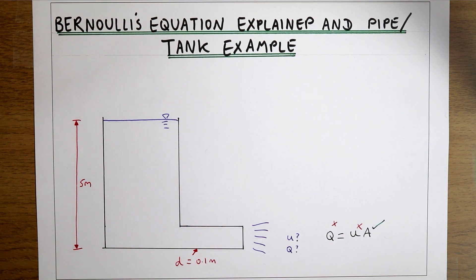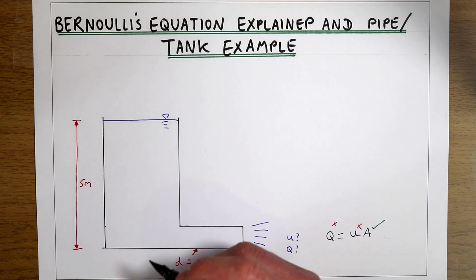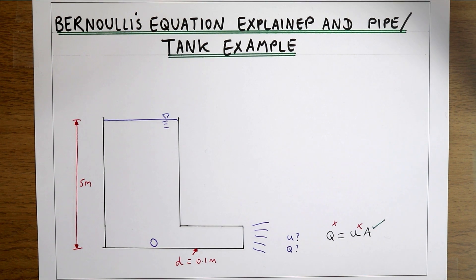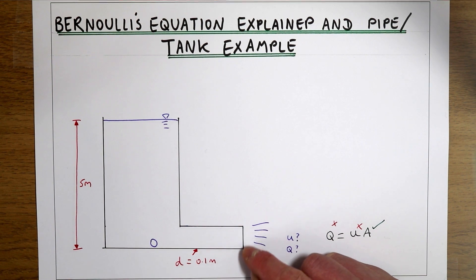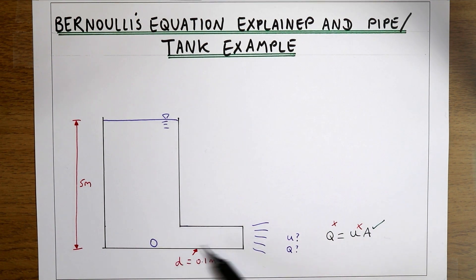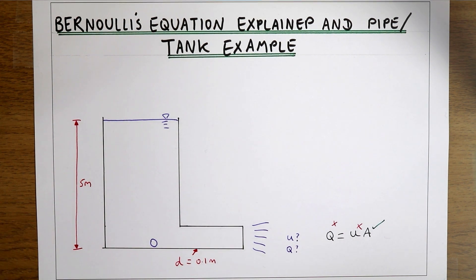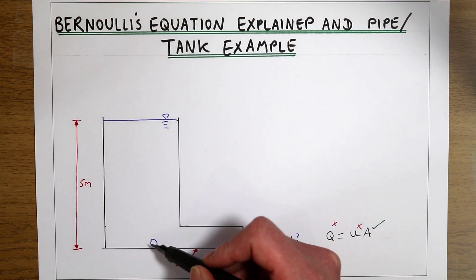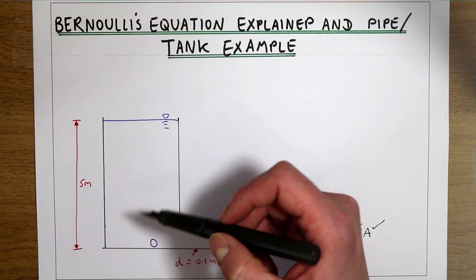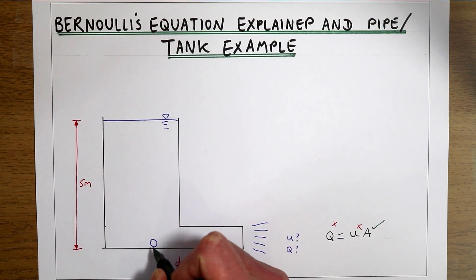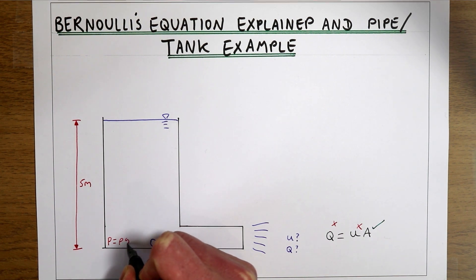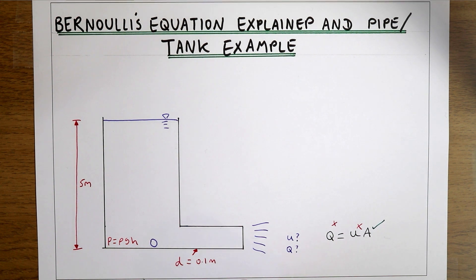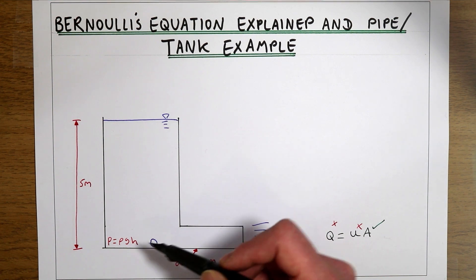Rather than mathematically deriving Bernoulli's equation, we can derive it by thinking about what is physically going on in this system. If we think about a particle of water at the base of the tank with the valve shut, when we open the valve this particle will accelerate down the pipe. The only thing giving this particle energy to move is the five meters of water above it — the pressure from that water, which is rho g h.